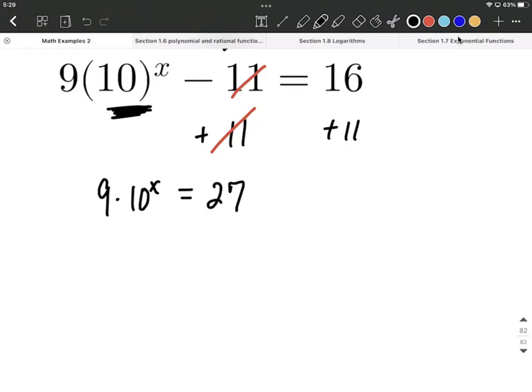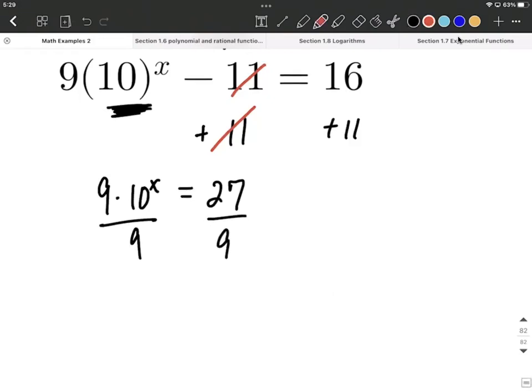The exponent's only attached to the 10, so our next step should be trying to get rid of that 9. We're going to divide both sides by 9 in this case. As we divide by 9, multiplying and dividing, inverse operations, that'll put 10 to the x power on one side by itself. This time, 27 divided by 9 actually works out pretty nicely, and it'll give us a 3.